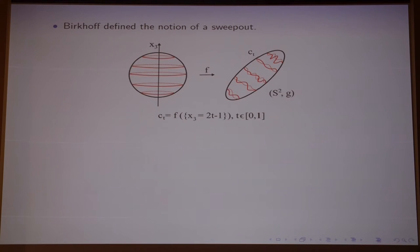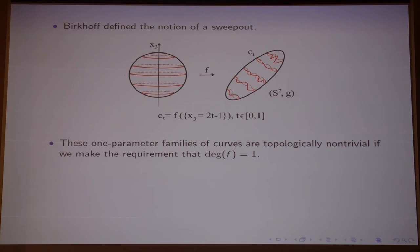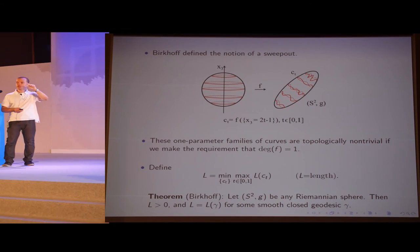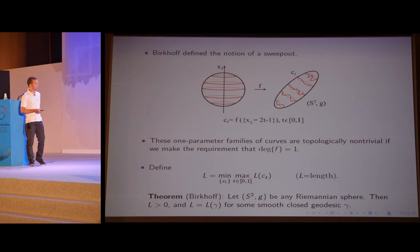A sweep-out is a one-parameter family of closed curves which cover your S2 in a topologically non-trivial way. You can think of those curves as images of the standard family of round circles by some map with degree equal to 1. Once you have the right notion of sweep-out, you perform the min-max procedure: for each such sweep-out, you look at the curve with maximum length, then minimize this number over the class of all sweep-outs, producing a number L. Birkhoff proves that this number L is strictly positive and is always achieved as the length of some smooth closed geodesic. So the answer to Poincaré's question is yes: every Riemannian sphere must contain at least one closed geodesic.